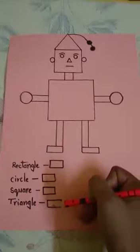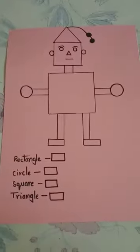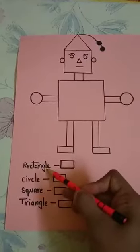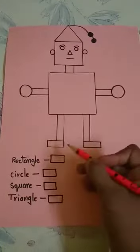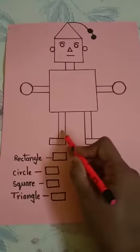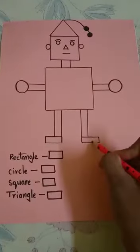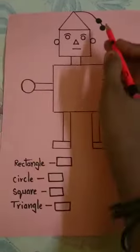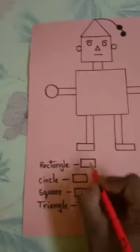Okay children, now count the shapes. Now, first is rectangles. So count rectangles. 1, 2, 3, 4, 5, 6. Six. Okay children?